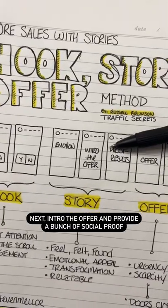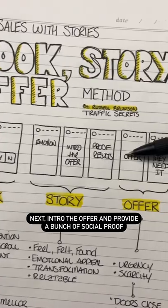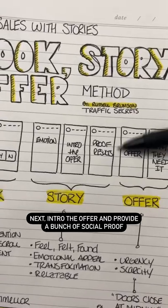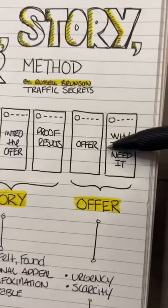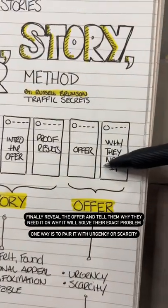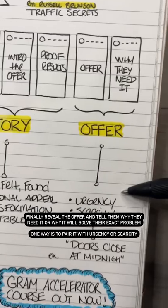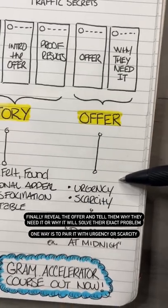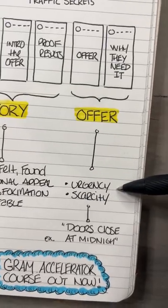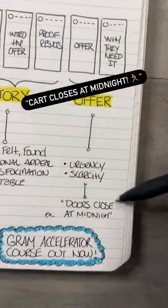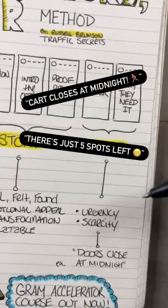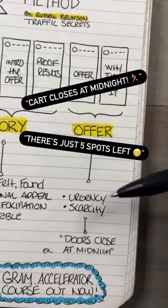After you get them in there, you're going to intro the offer and then show them a bunch of social proof. Then reveal your offer and tell them why they need it. This usually works with urgency or scarcity — something like 'doors close at midnight' or 'there's only five spots left.'